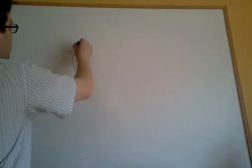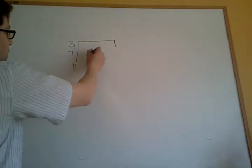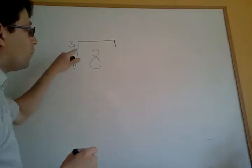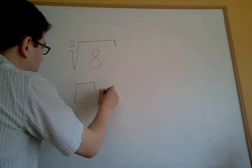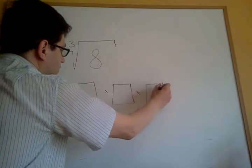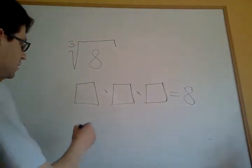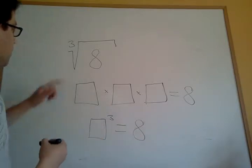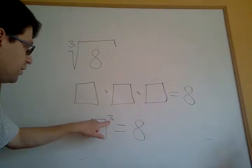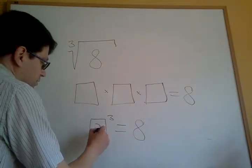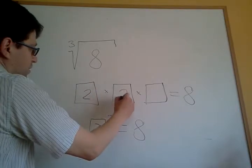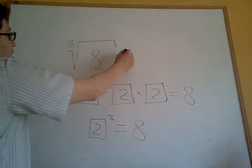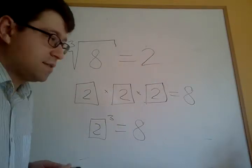What about the cubic root of 8? Cubic root of 8 means: what 3 equal numbers do you need to multiply to get 8? It means what number to the power of 3 equals 8? Cubic root is opposite to cube, which is the power of 3. This number is 2, of course, because 2 times 2 equals 4, and 4 times 2 equals 8. Therefore, cubic root of 8 equals 2.